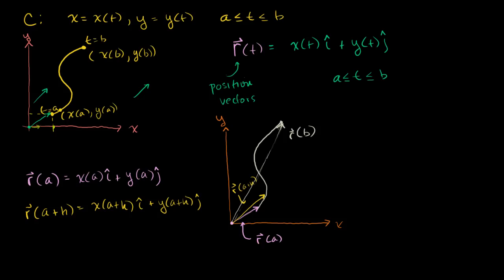In the last video, we hopefully got ourselves a respectable understanding of how a vector-valued function works — or even better, a position vector-valued function — that is, in some ways, a replacement for our traditional parametrization to describe a curve. What I want to do in this video is get a little bit of a gut sense of what it means to take a derivative of a vector-valued function.